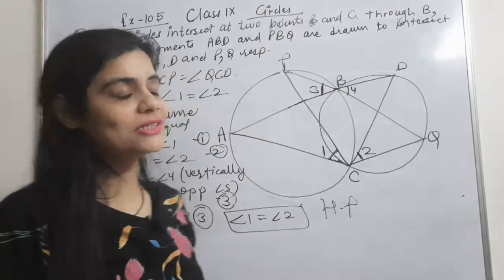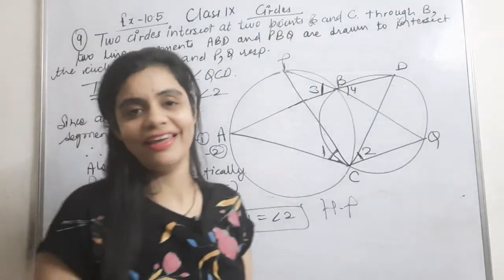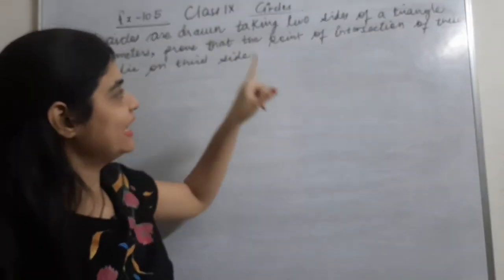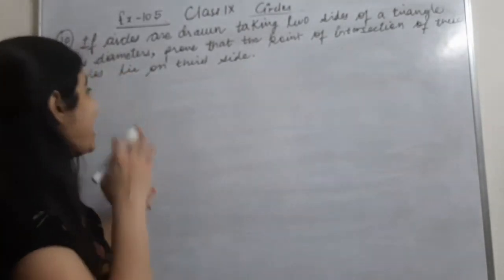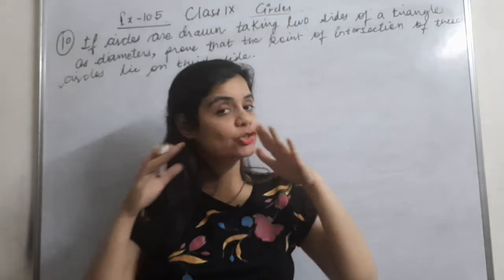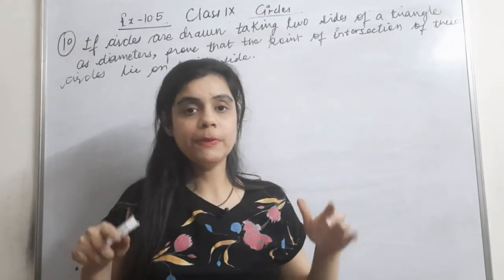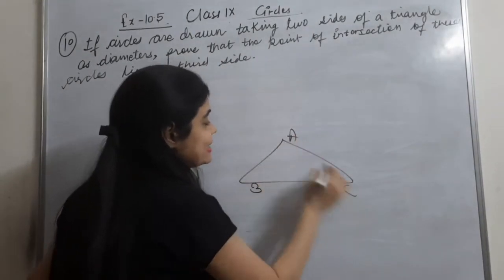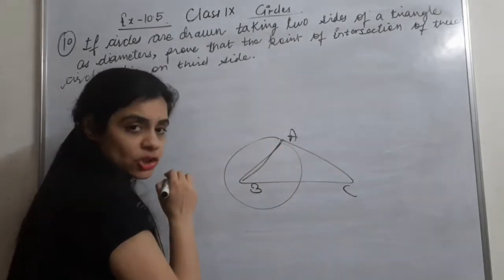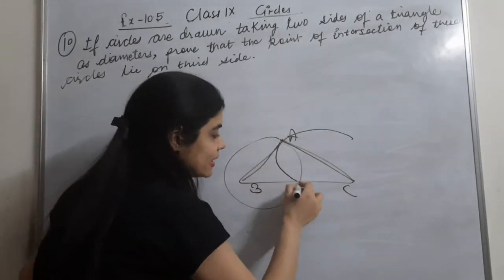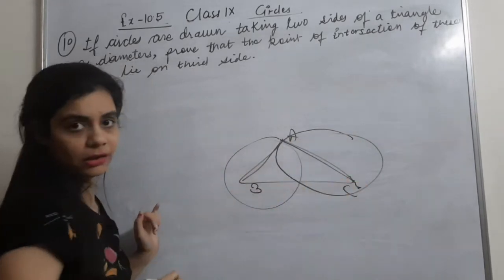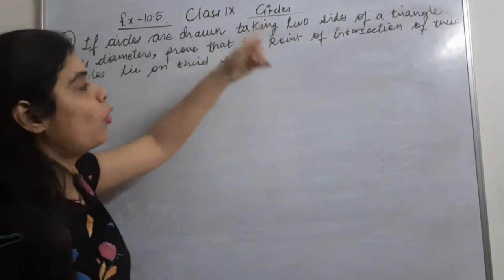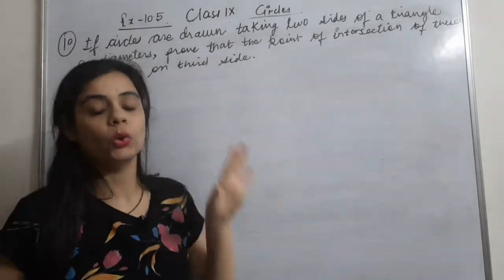So even though the figure looked complicated, the solution is not complicated at all. Now the 10th question: if two circles are drawn taking two sides of a triangle as diameters, prove that the point of intersection of these circles lies on the third side.